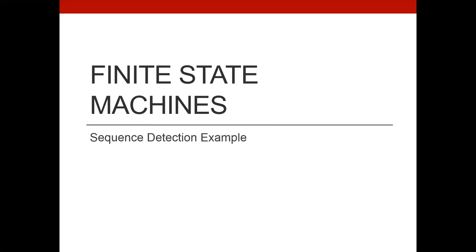In this lecture series on digital logic, we're going to learn how to create finite state machines. We're going to make a sequence detector — we'll create a Moore machine and a Mealy machine. Let's start with our example problem. We'll learn how to make a state diagram for a Moore state machine, and then we'll learn how to make the state tables and state transition tables.